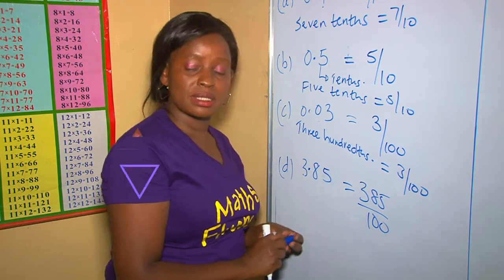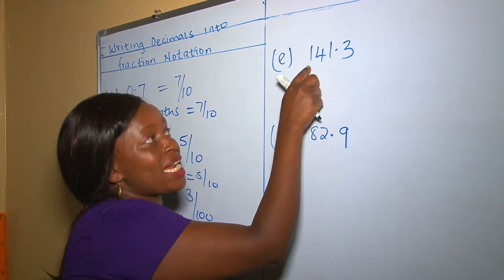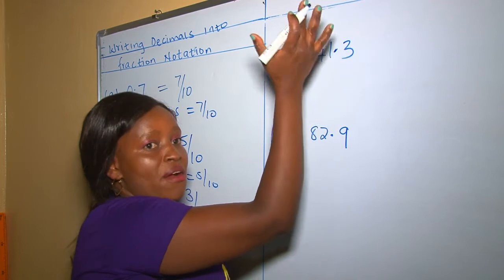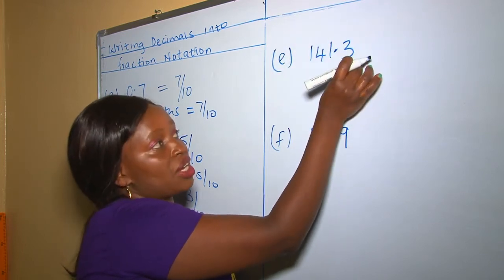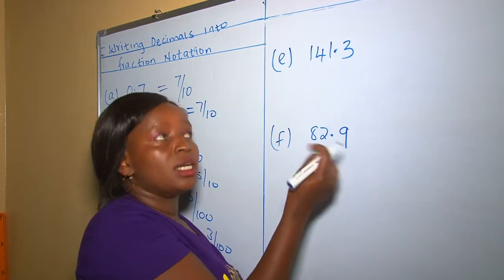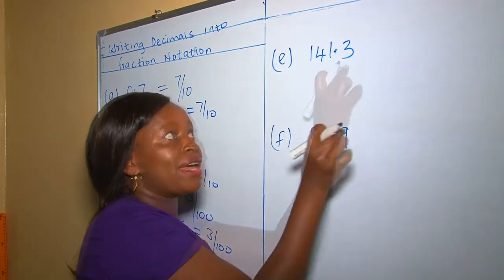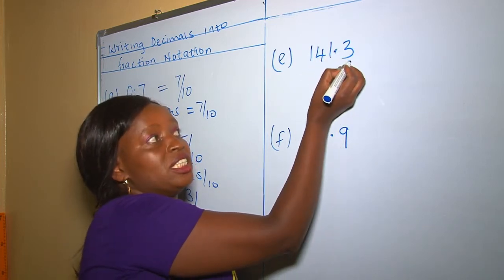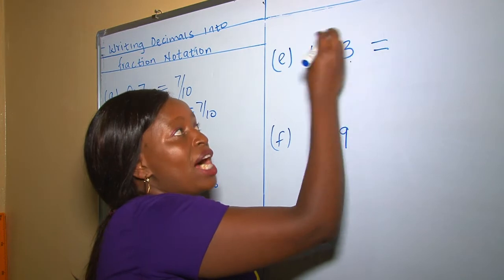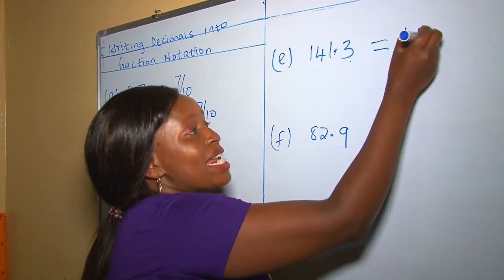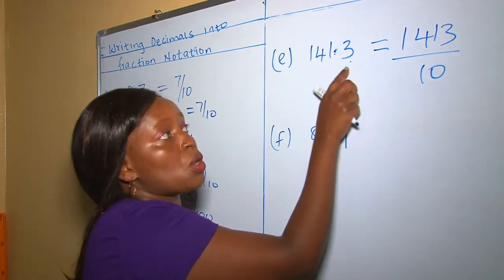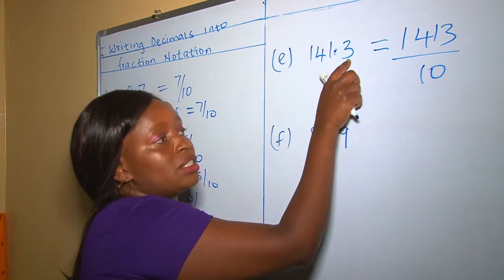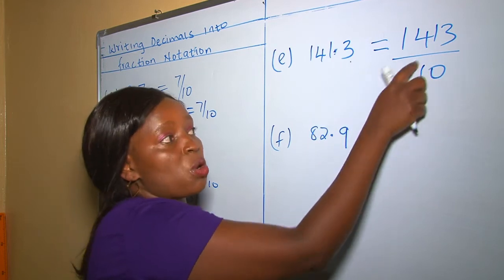Let's have more examples. To work out this kind of question, which is one hundred and forty-one point three — after the decimal point on our right, how many digits are there? It's only one digit, meaning to write this as a fraction, our denominator should have only one zero. Therefore, our answer is going to be one thousand four hundred and thirteen over ten, because there was only one digit after the decimal point, meaning one zero, which is over ten.